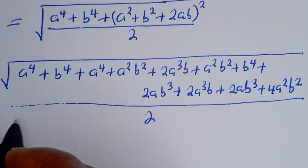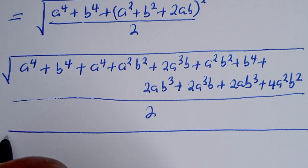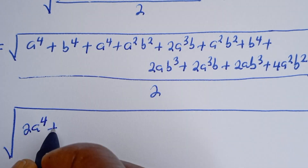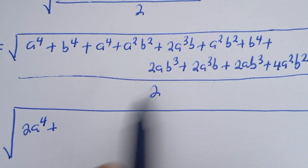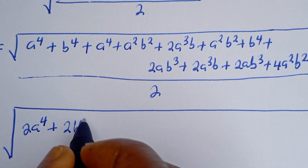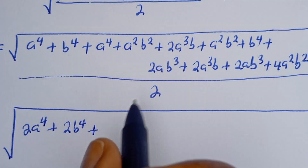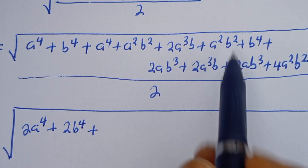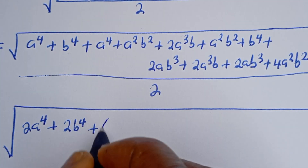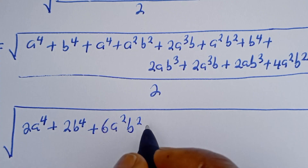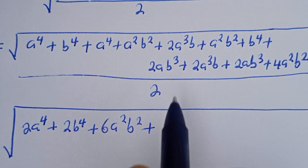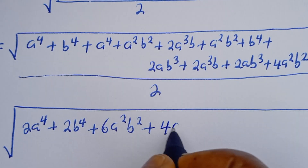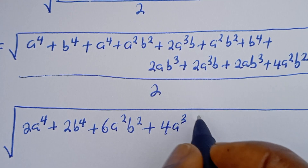Collecting like terms: a⁴ plus a⁴ gives 2a⁴; b⁴ plus b⁴ gives 2b⁴; a²b² plus a²b² plus 4a²b² gives 6a²b²; 2a³b plus 2a³b gives 4a³b. All divided by 2.